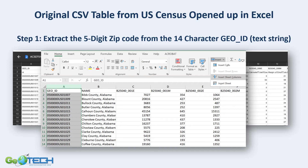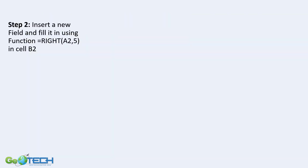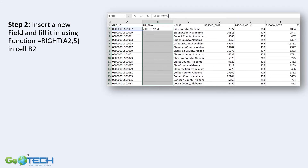We can insert a new ID field, but we really only want those five rightmost digits. In step one, we insert a new field and fill it using a function. The function is: equals RIGHT, A2, comma, 5, close parenthesis. Look at cell B2 — that is where the new field was added — because RIGHT takes from the right of A2 the five digits.